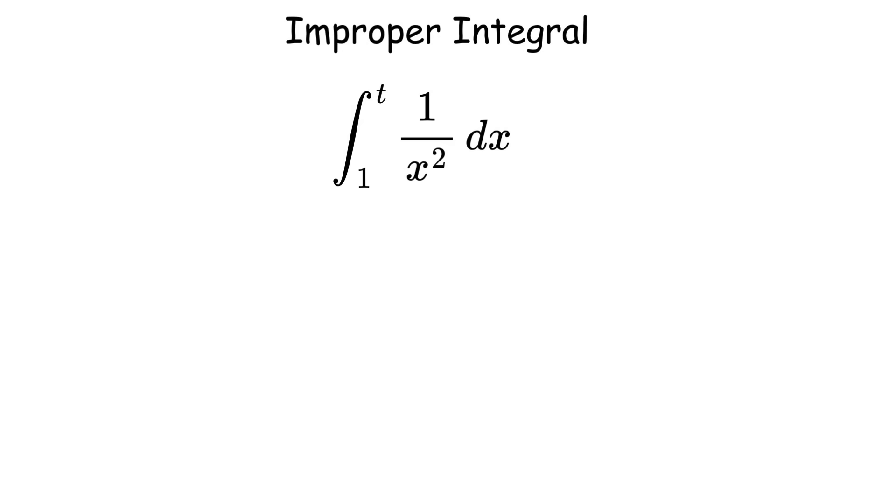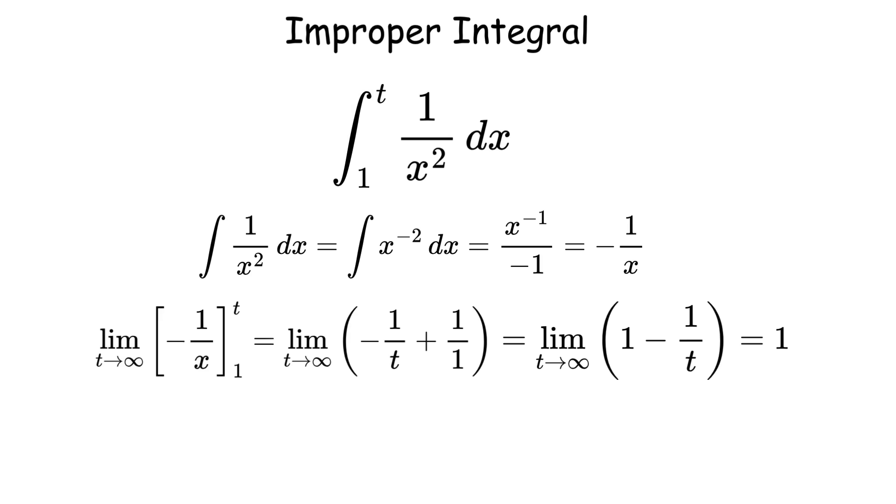So for the integral, you replace infinity with some variable t, integrate normally, then take the limit as t approaches infinity to get 1. Sometimes these converge to a nice finite number. Sometimes they blow up to infinity.